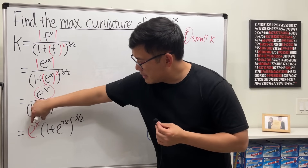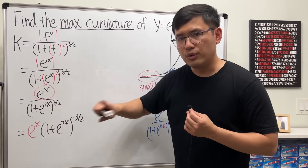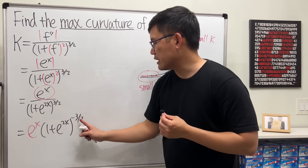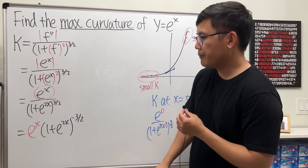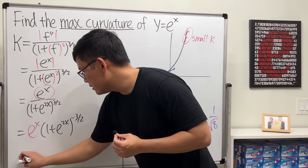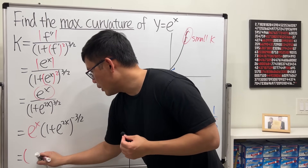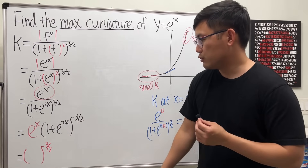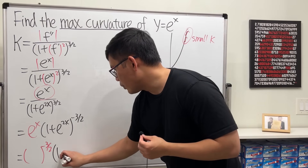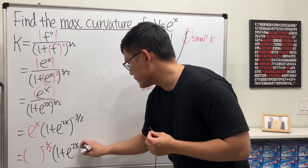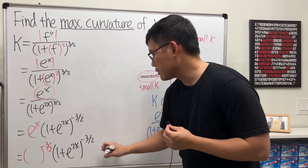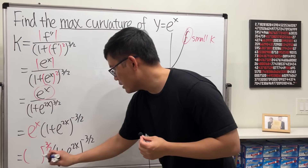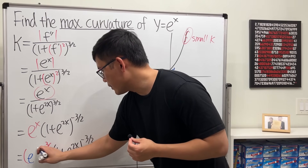Then I want to multiply the inside terms together. To do so, I need to raise e to the x to the same power — negative 3/2 — so that I can combine the bases. The exponent on e to the x that, when multiplied by negative 3/2, gives x is the reciprocal: negative 2/3. Then we can multiply the insides together since they all have the same outer power.